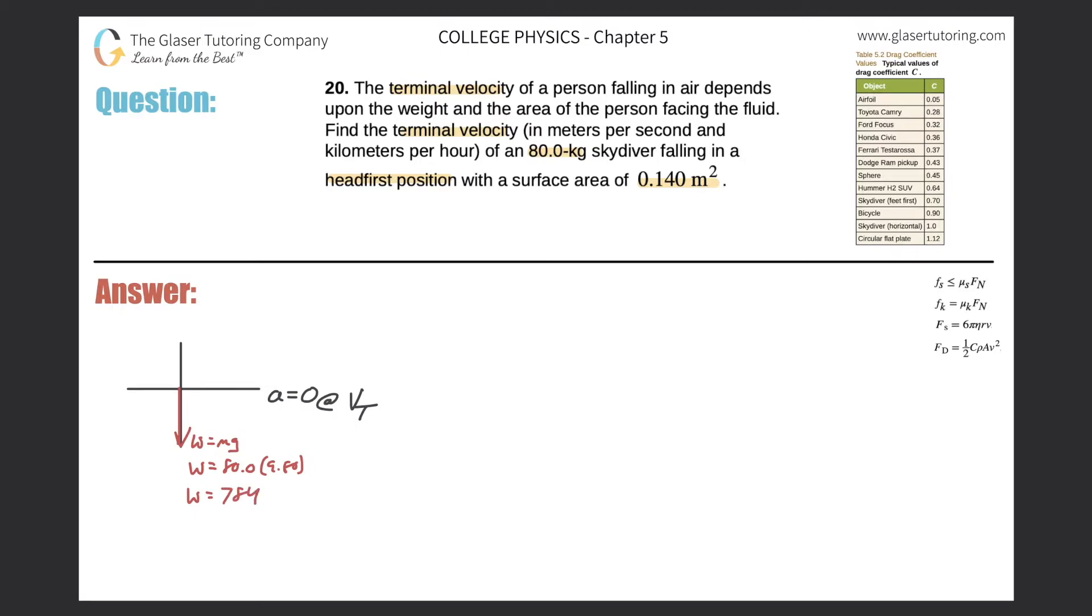So now this weight, assuming that there is zero acceleration, which is the condition at terminal velocity, this weight must be directly balanced by a force pointing upward. And guess what that force is called? That force will be called the drag force. So the drag force in this problem is going to be 784 newtons.